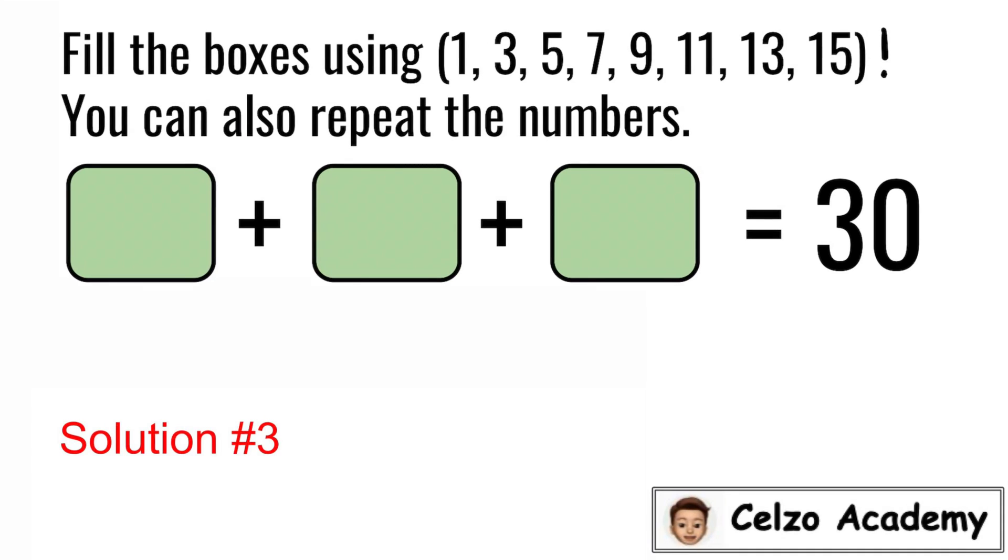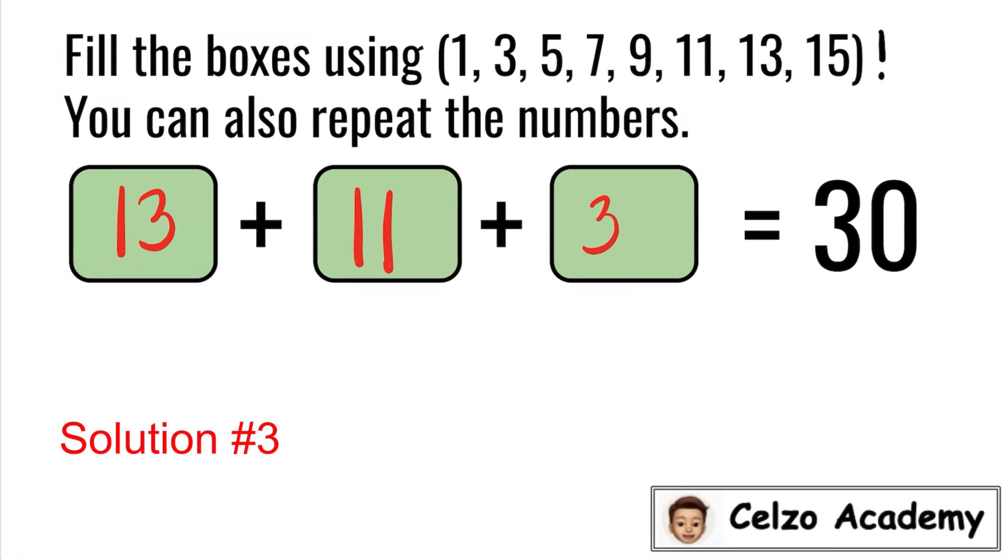Here's our solution number 3. For the first box, I will write the number 13. For the second box, I will use the number 11. And for the third box, I cannot use 6 anymore because that's exactly the same as our solution number 1. I will use 3 exclamation point. And this means 3 factorial.